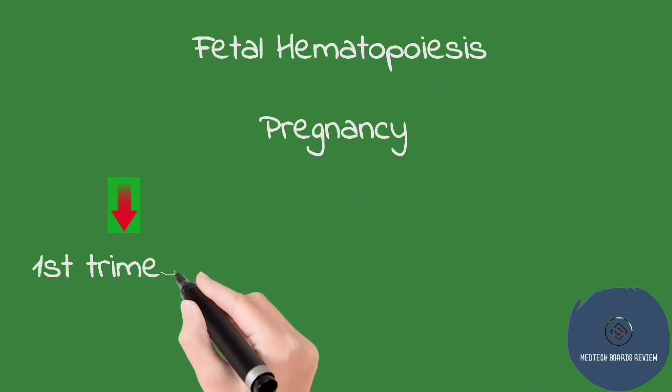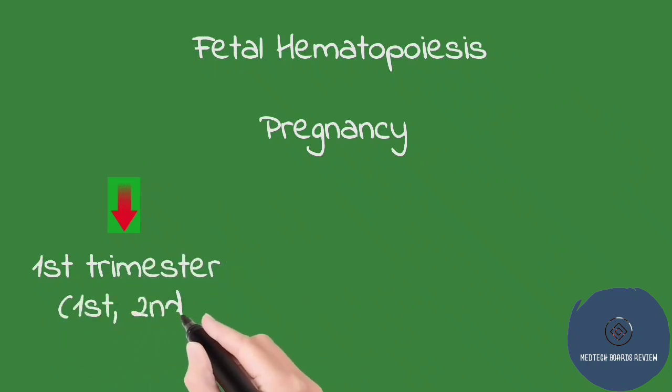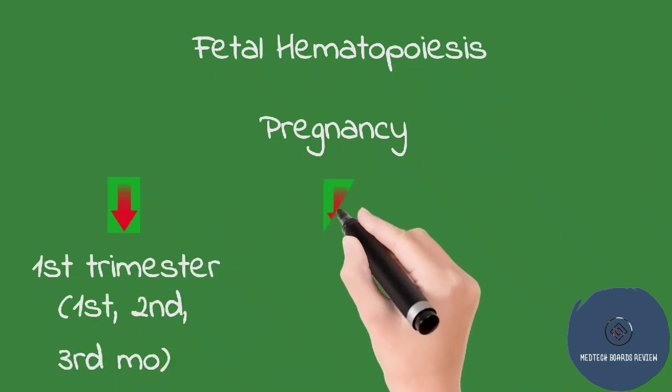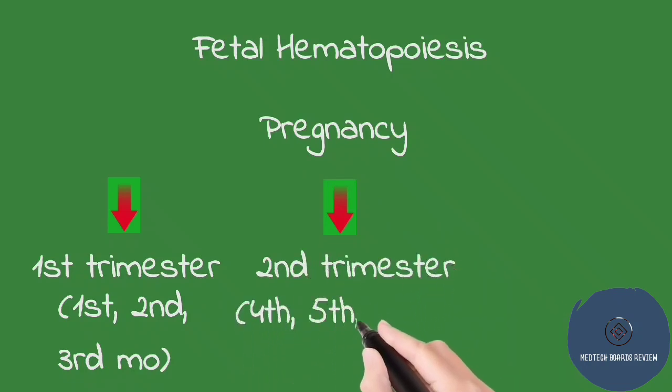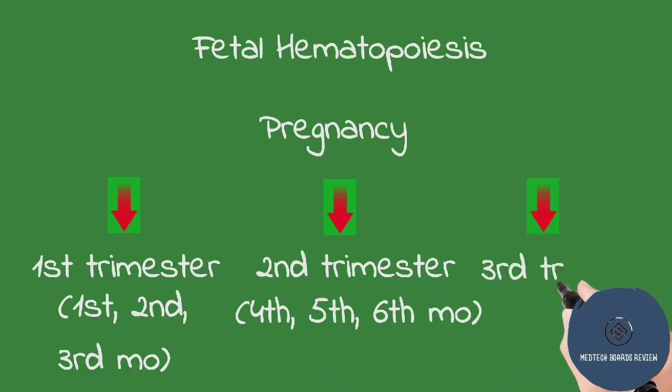Pregnancy consists of first, second, and third trimesters. The first trimester consists of first to third month of pregnancy, while the second trimester consists of fourth to sixth month of pregnancy, and the third trimester consists of seventh to ninth month of pregnancy.